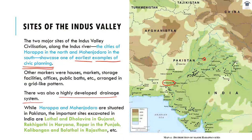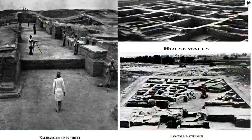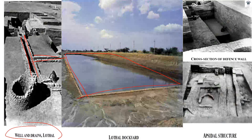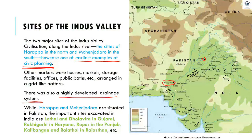Looking at other places — this is Kalibangan, the main street there; house falls in Banavali; the eastern gate. We can see the wells and rail drains in Lothal. There is also a dockyard, and you can imagine a lot of ships there. There is an apsidal structure and the cross-section of a defence wall as well. This tells you how advanced the urbanization was in that period.